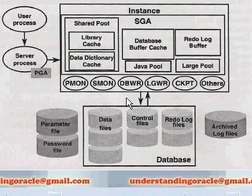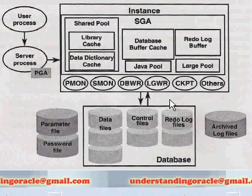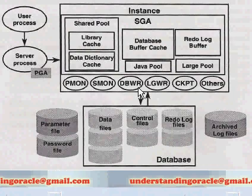Today we'll talk about Oracle primary components, as shown in this picture. First of all, it's the Oracle instance. An Oracle instance is a combination of background processes and memory structures. The instance must be started to access the data in the database. Every time the instance is started, a System Global Area, called SGA, is allocated and Oracle background processes are started.